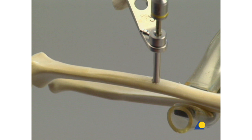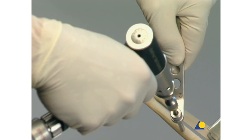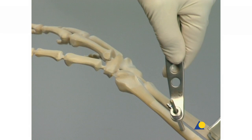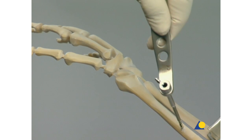The image intensifier can be used to check the final position of the Schanz screws. The tip of the self-drilling Schanz screw must be anchored in the far cortex to ensure stable fixation. Penetration of the far cortex is not necessary. Once the Schanz screw has been placed, it's released from the adapter and the drill sleeve is removed.